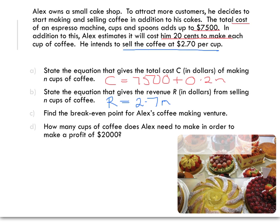Part C then asks us to find the break-even point for Alex's coffee making venture. What our break-even point is, is we're looking for when our profit equals zero or, alternatively, when our cost equals our revenue. You've got some options about how you go about solving a question like that.